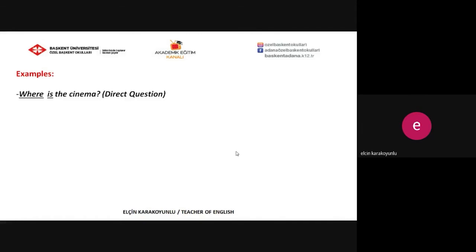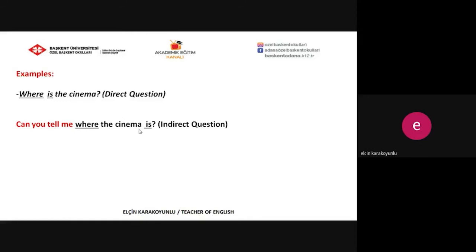Let's check the examples. 'Where is the cinema?' — this is a direct question. For direct questions, we use the WH question word at the beginning, then the suitable auxiliary verb, then the subject. When we want to turn this into an indirect question, first we put the most suitable phrase at the beginning — for example, 'Can you tell me' — and then the WH question word, and then the subject followed by the correct auxiliary verb.